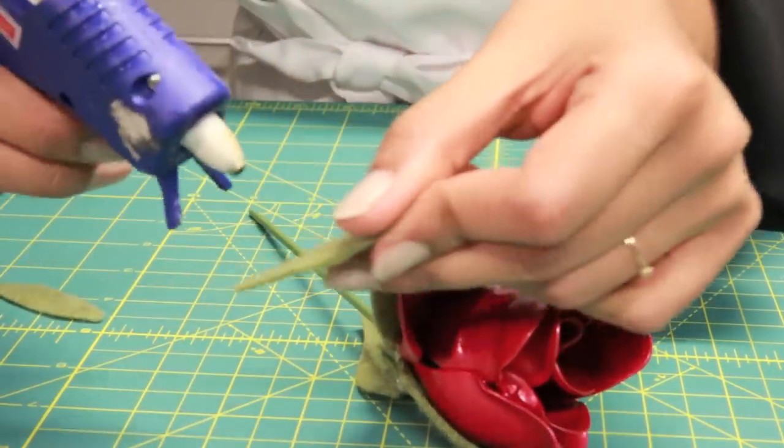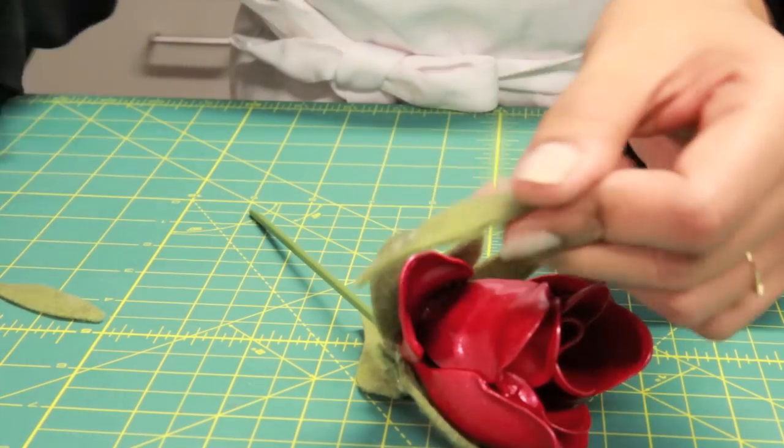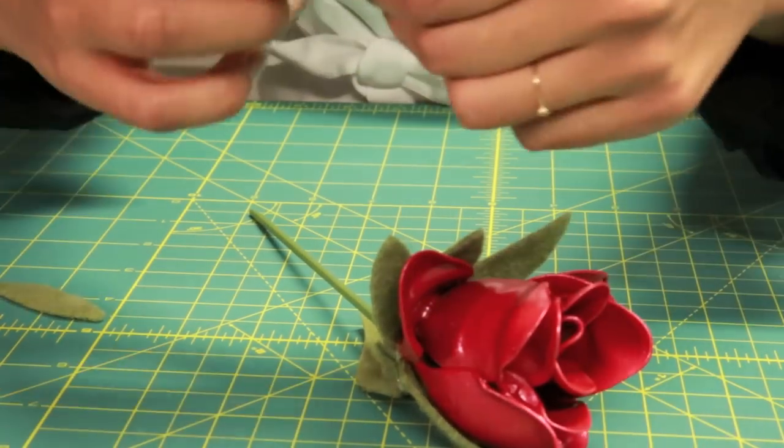Glue the leaves on. Just put it right at the tip. And then attach it to the bottom. And that's how you make a rose out of plastic spoons. For more tips and tricks, visit girlstyle.com.